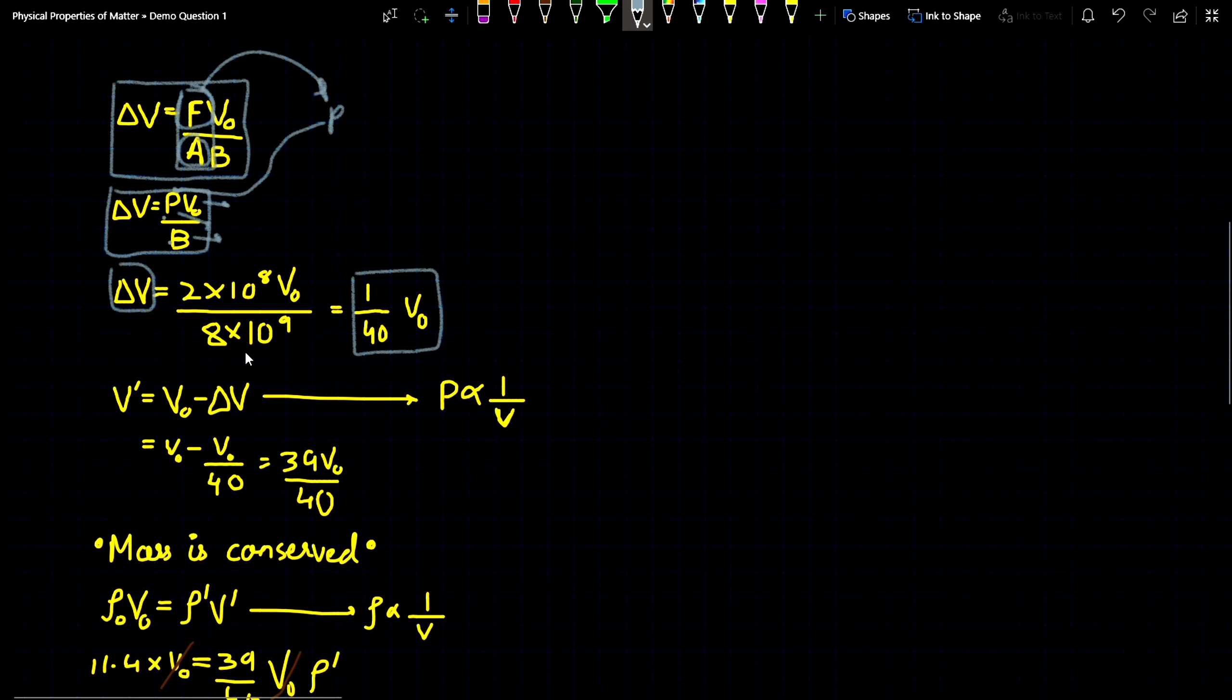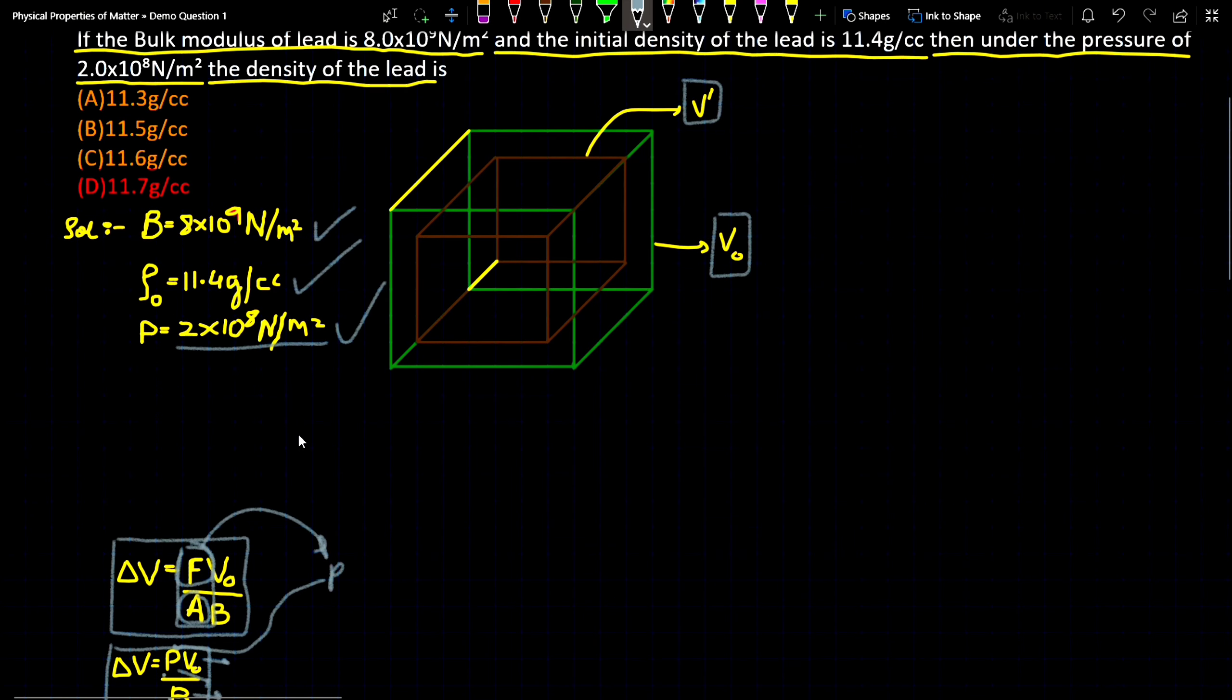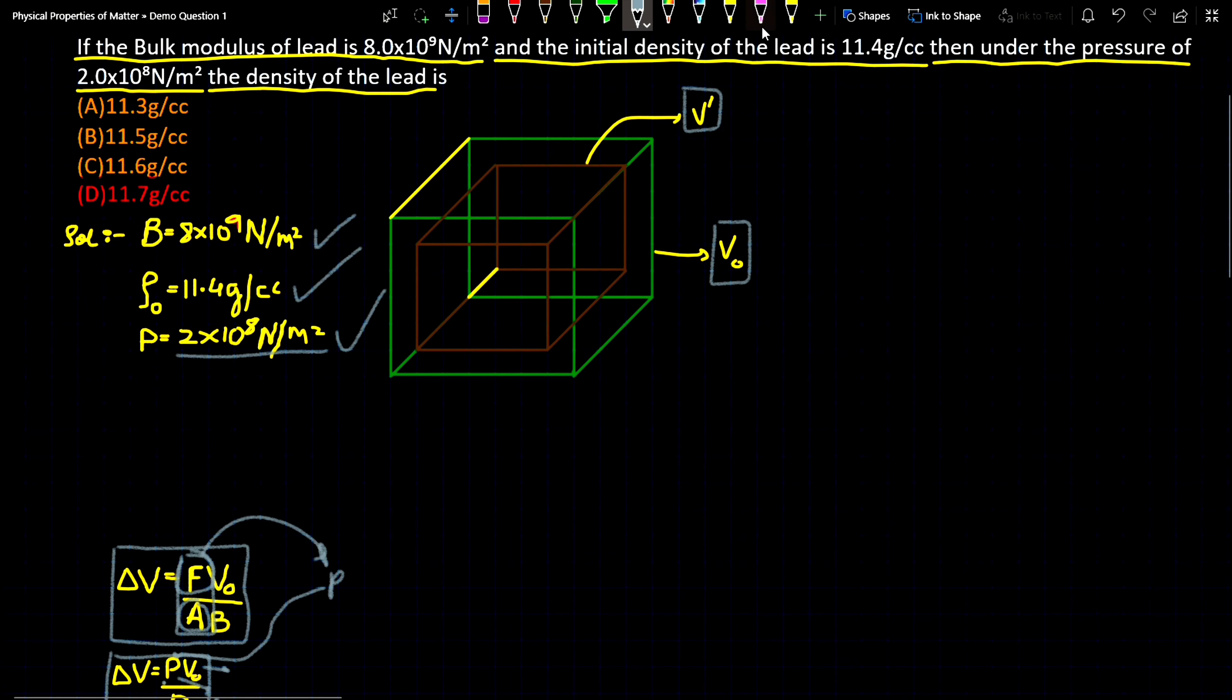Now if we need the final volume, we would write V' = V₀ - ΔV. Now there is a question: why this minus over here? Why not the plus?